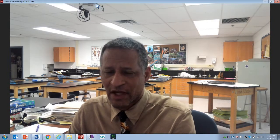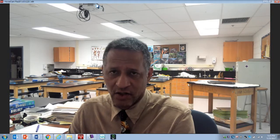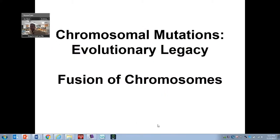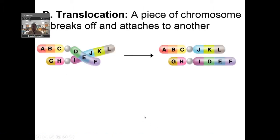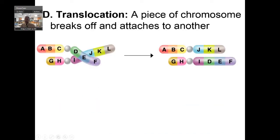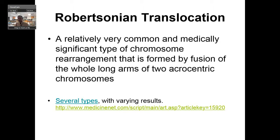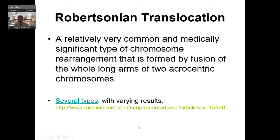Now let's talk about fusion of chromosomes — and does it cause a loss of information? This is Part 2: chromosomal mutations and the evolutionary legacy of chromosome fusion. The evidence points to something called Robertsonian translocation, a special type of chromosomal rearrangement. When people hear that chromosomes can fuse, they worry it will cause errors — and yes, it can be one way Down syndrome occurs when chromosomes fuse incorrectly. But there are also times when fusion doesn't cause any problem.